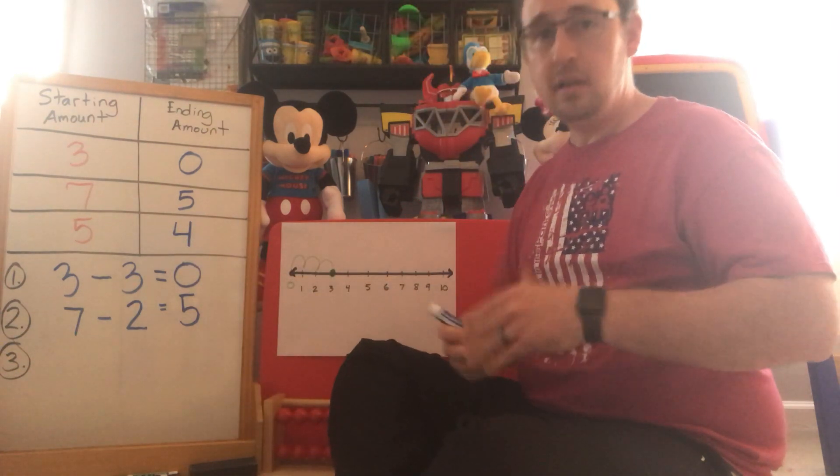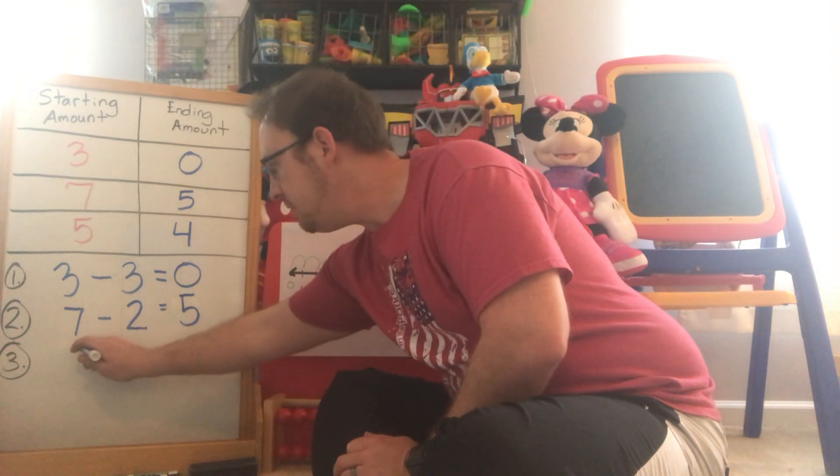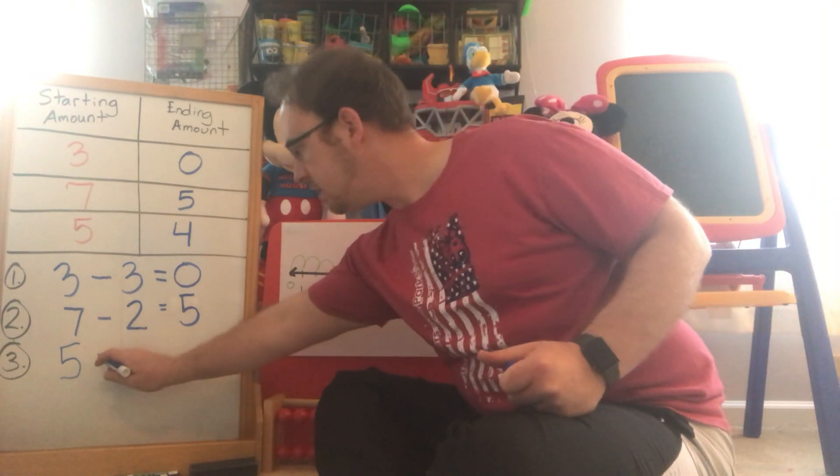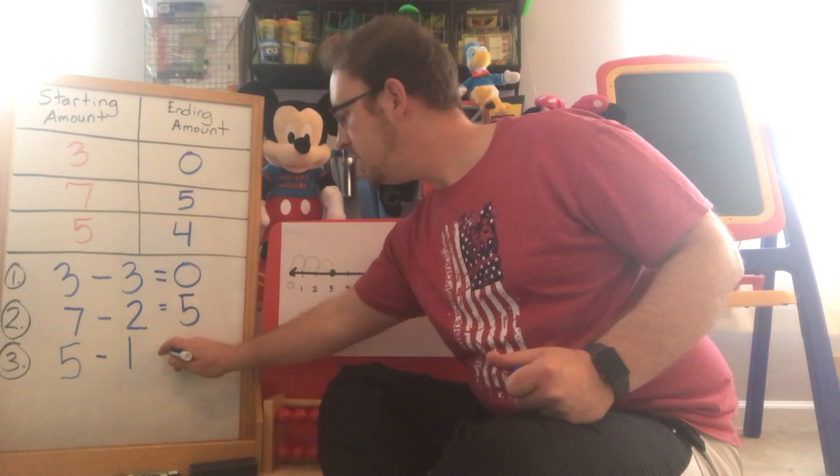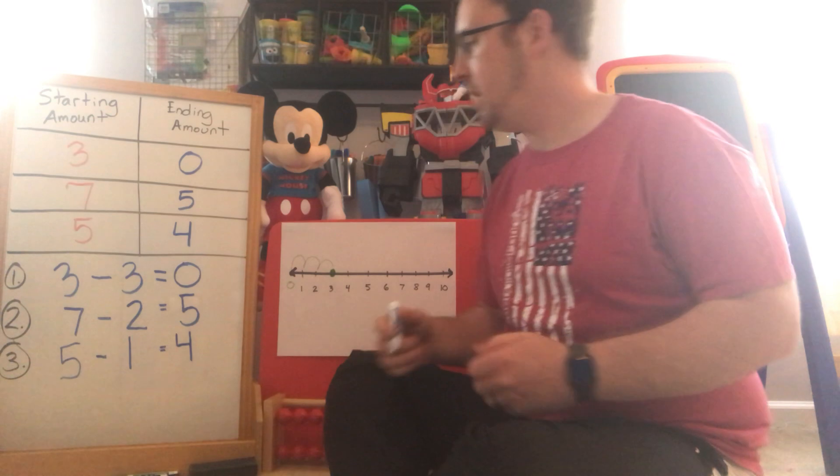Alright so our ending amount was four because we removed one. So when I record my equation I'll have my starting number which was five. My minus symbol which means we're taking away or removing something. And we took away one. Five minus one is equal to four. Okay.